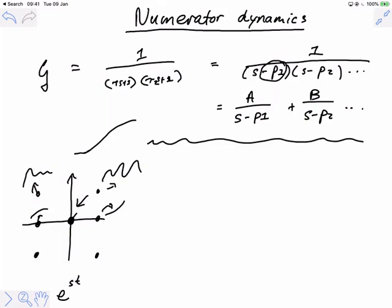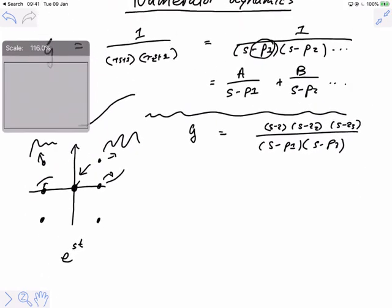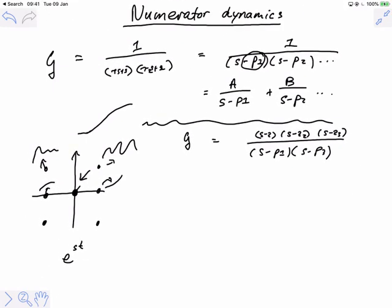But what if we have this other kind of G where we also have terms above the line? We call these things zeros. There's no new special behavior that arises from having zeros. There's no e to the power of a zero that we have to consider. The easiest way to understand the effect of numerator dynamics is simply to understand this basic idea.